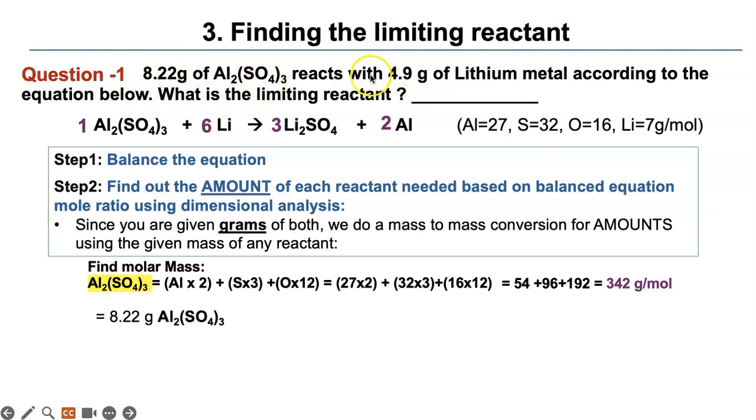I'm going to start my dimensional analysis with the given value of aluminum sulfate. I'm going to try to find out with 8.22 grams how much lithium is used up in grams. So then I'm going to multiply this by a factor with grams of aluminum sulfate at the bottom, this one. This is the mass of one mole. I'm going to make a factor out of it. Aluminum sulfate grams cancelled out. Now I need to get rid of moles of aluminum sulfate. So I'm going to use the mole ratio from the balanced equation for aluminum sulfate and lithium here.